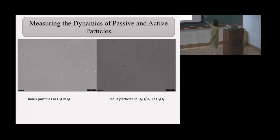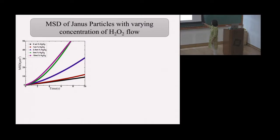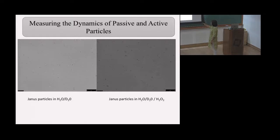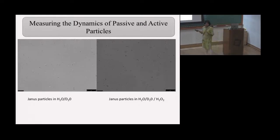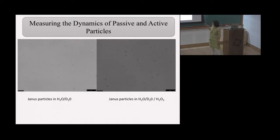Looking at certain particles in the other video — here we have peroxide in the medium. You can see that the particles do have some directional motion. The suspensions are dilute enough to consider them as single particles. We look at the trajectories of each particle and find the mean square displacement by averaging over all particles — about 20 particles.